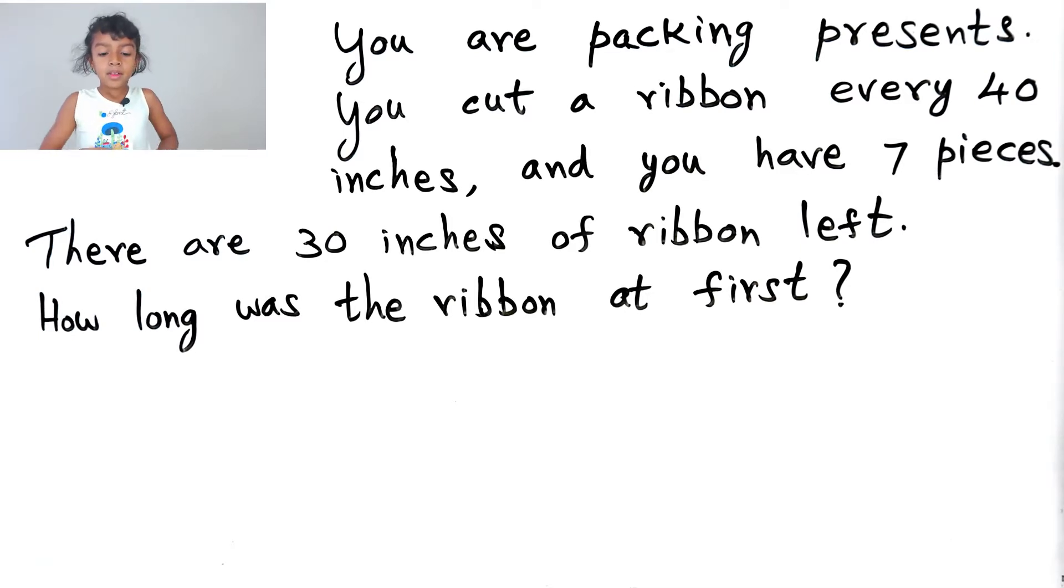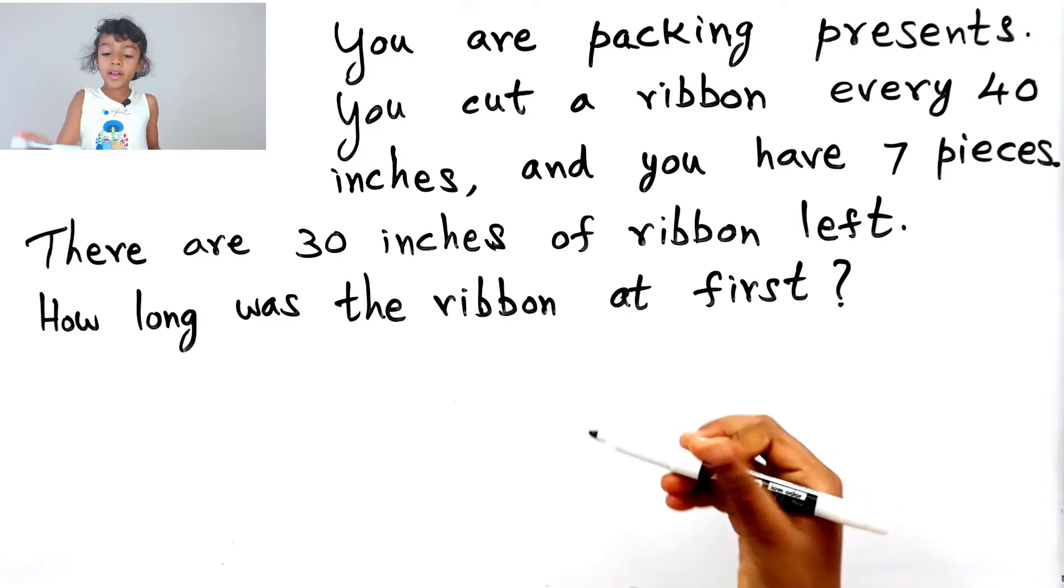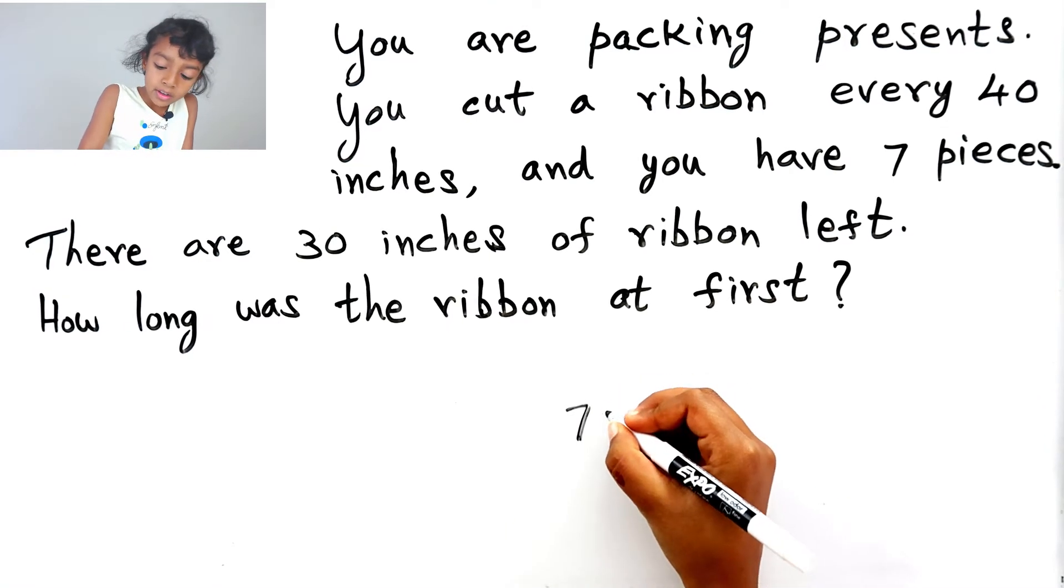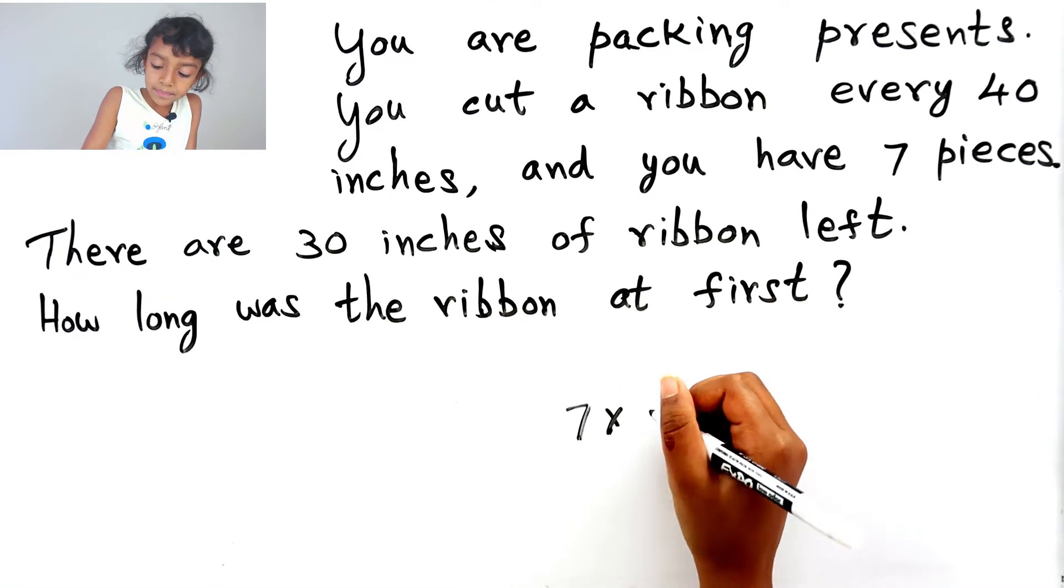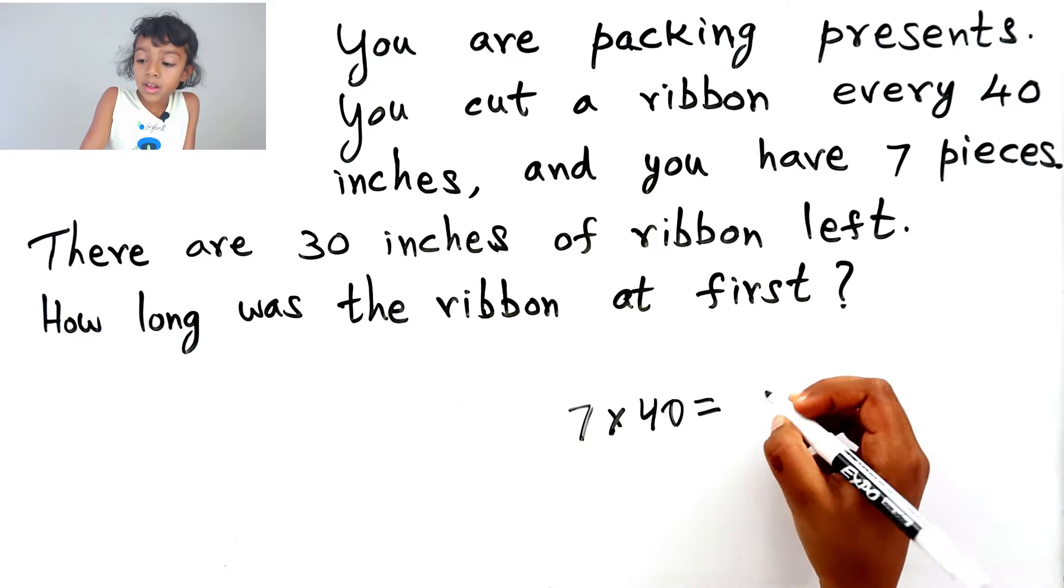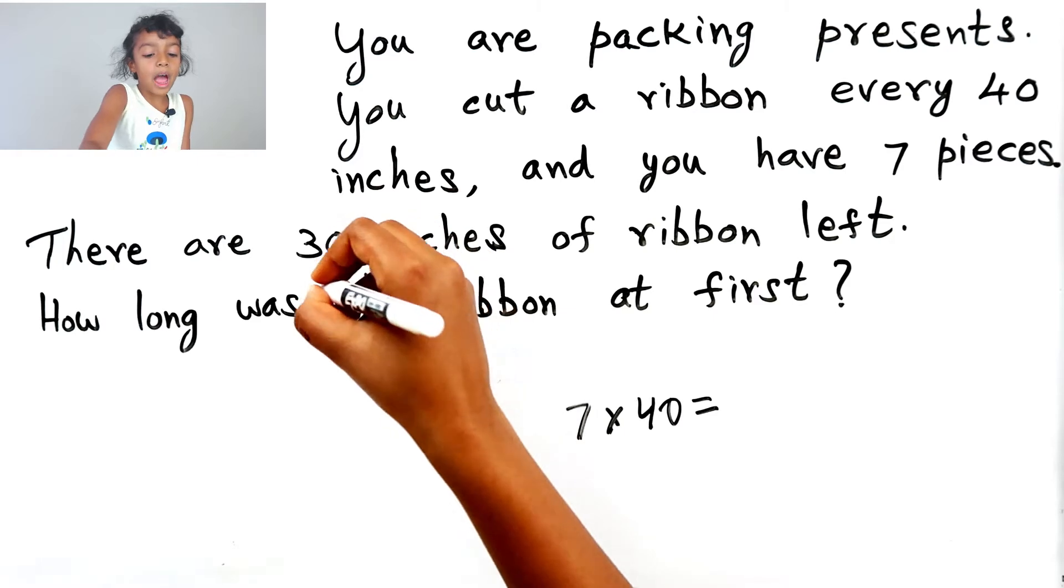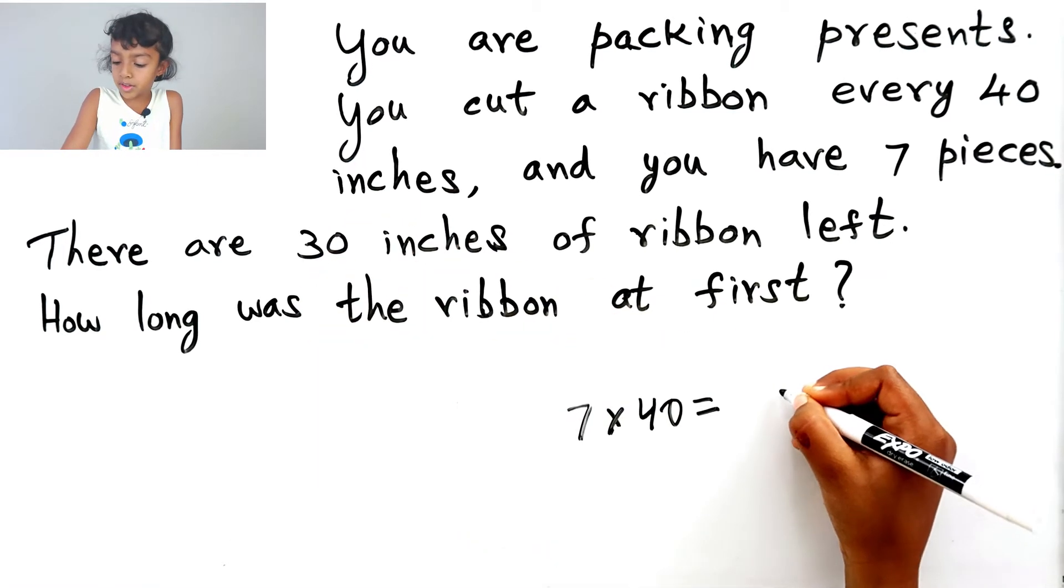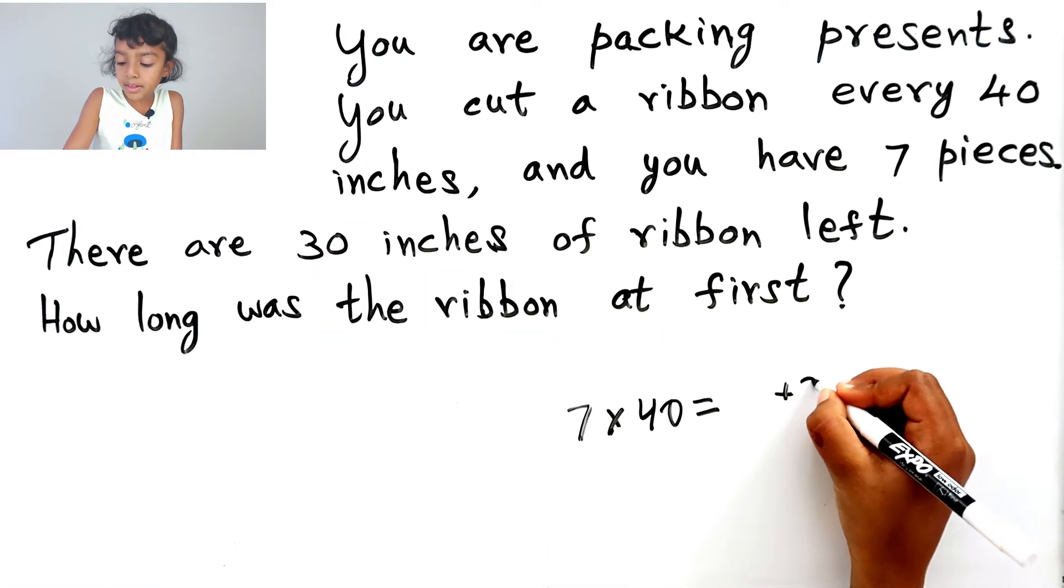Okay, so, 7, you gotta do 7 times 40 to find the answer, and then you gotta add 30. So, that number plus 30.